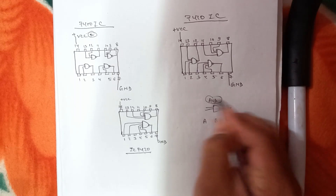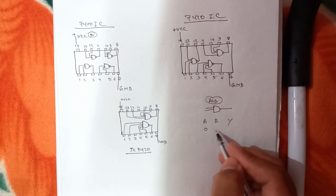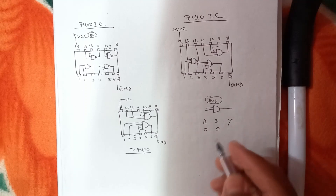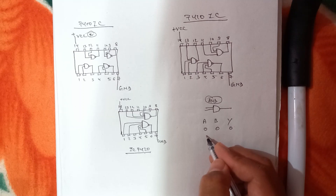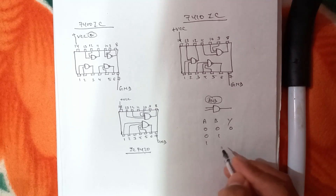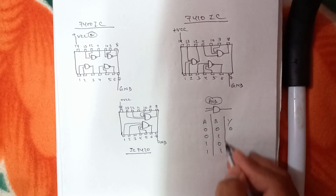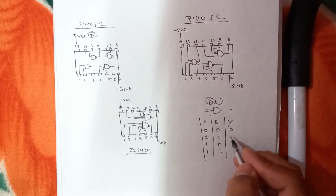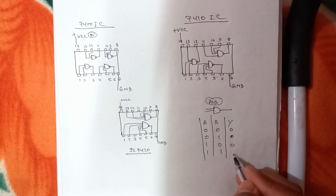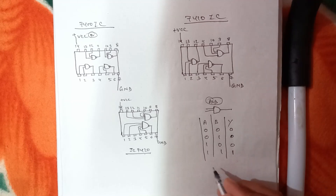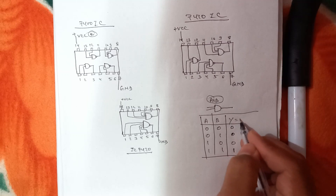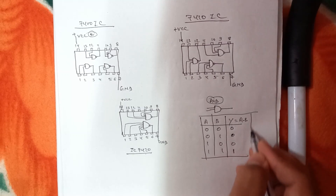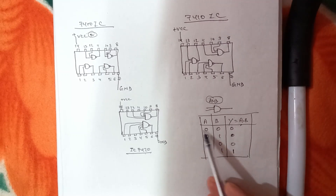If both inputs are low, the output will be low. The possible input combinations are 00, 01, 10, and 11. Only when both inputs are high do we get a high output. We can remember this as Y = A·B — whenever you multiply A and B, we get the output.